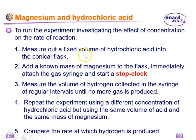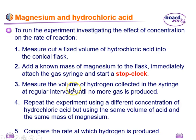You measure a fixed volume of hydrochloric acid at a particular concentration, then add a known mass of magnesium. Attach the syringe, start the stop clock, and measure the volume of hydrogen collected over a set period of time.